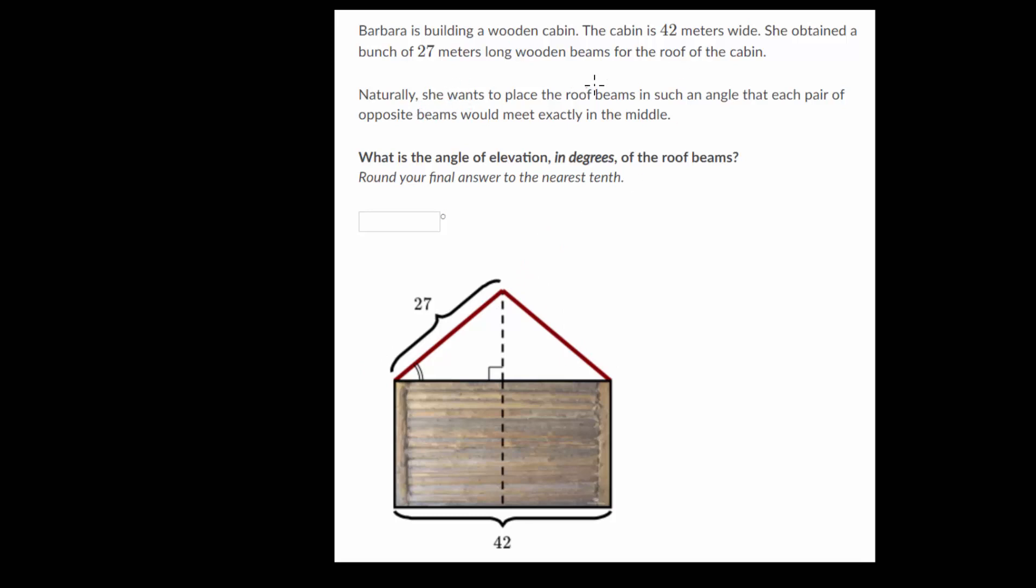Naturally, she wants to place the roof beams in such an angle that each pair of opposite beams would meet exactly in the middle. So it looks like we want these to meet right in the middle of the house or in the middle of the roof. So what is the angle of elevation in degrees of the roof beams? And they indicate here which angle we're looking for, but it's the angle of elevation because it's going up.